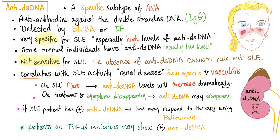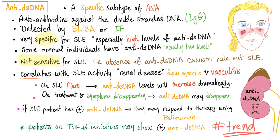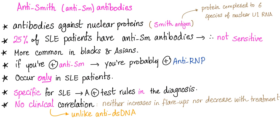Let's leave rheumatoid land and go to lupus land. Anti-double-stranded DNA is a specific subtype of ANA — not sensitive, but very specific for lupus, and it does correlate with disease activity. When you have a flare you have lots of them; when you treat the flare, they decrease. Don't forget: patients taking TNF-alpha inhibitors, regardless of lupus, can show anti-double-stranded DNA antibodies in their plasma. Always trend the levels because every patient is different.